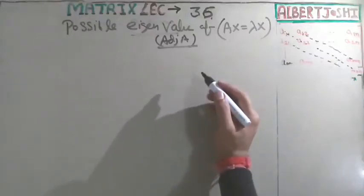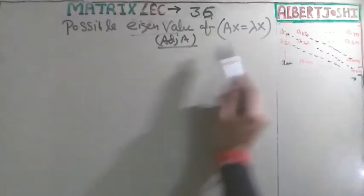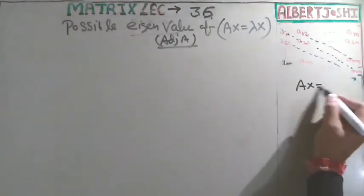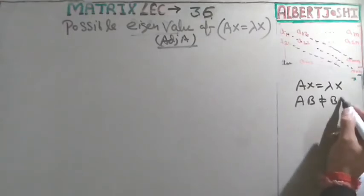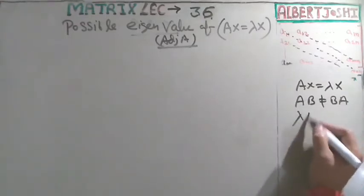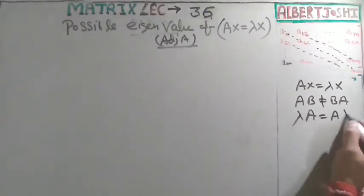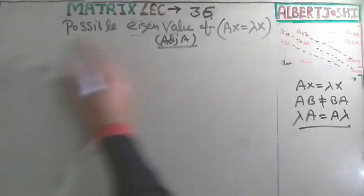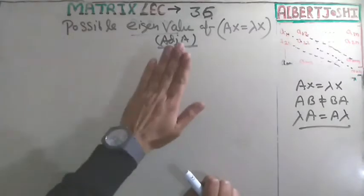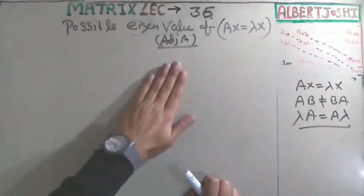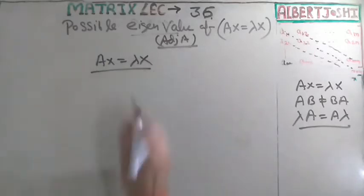Lecture number 36. Today we are discussing the possible eigenvalues of adjoint of A. The basic property is Ax = λx. Second property: AB is never equal to BA. Third: if you are multiplying a matrix with λ, you can also write it as A times λ. If you have eigenvalues, the question is: what are the eigenvalues of adjoint of A?